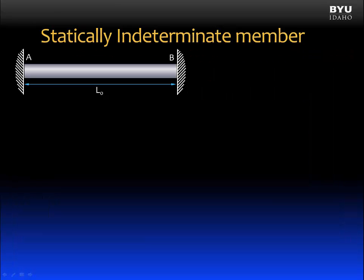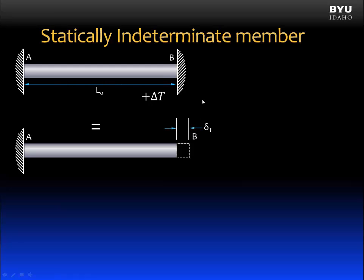Now let's consider thermal effects on a statically indeterminate member. Here we have a member that is fixed at both A and B, and it has an original length L-naught. If we increase the temperature of this member, it's going to want to expand.